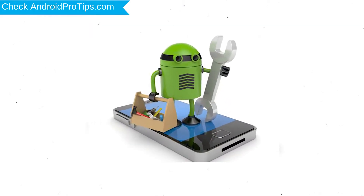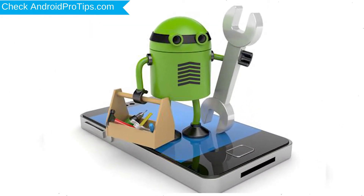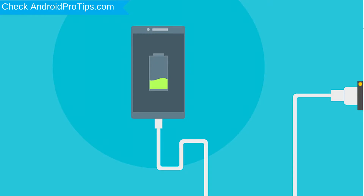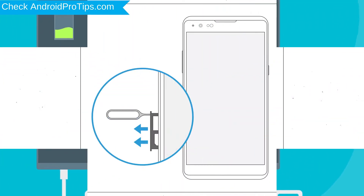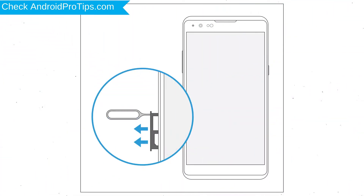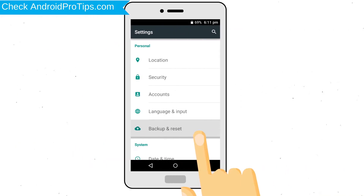Before resetting your mobile: your mobile battery must be above 50%, remove SD Cards and SIMs, and back up your Android mobile data if possible.